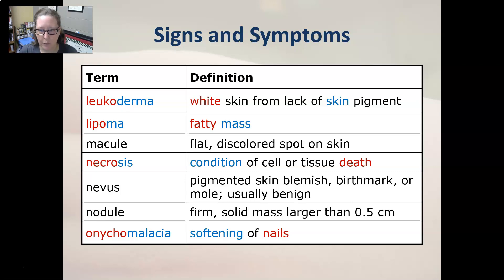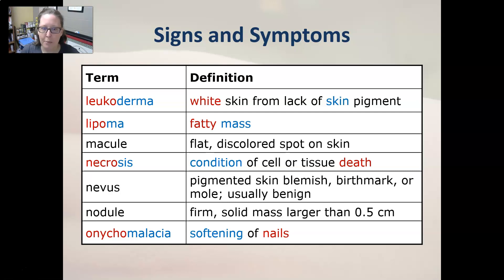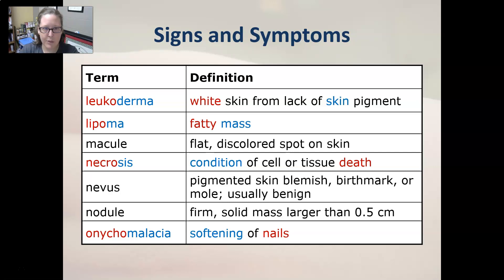Necrosis is a condition of cell or tissue death. A nevus is a pigmented skin blemish, a birthmark or a mole — it is usually benign. A nodule is a firm solid mass larger than 0.5 centimeters, so roughly a quarter of an inch or so.